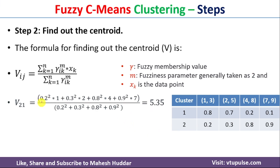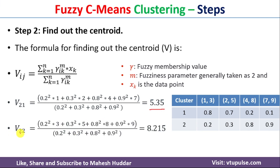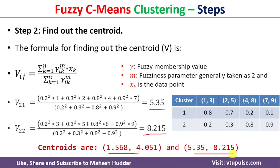Similarly, we calculate the second component of the second centroid by replacing the first-component values (1, 2, 4, 7) with the second-component values (3, 5, 8, 9). Solving this equation gives 8.215 as the second component of the second centroid. So the first centroid is (1.568, 4.051) and the second centroid is (5.35, 8.215). This completes the second step of the fuzzy c-means clustering algorithm.